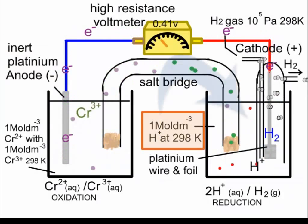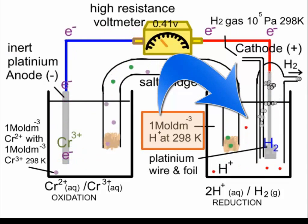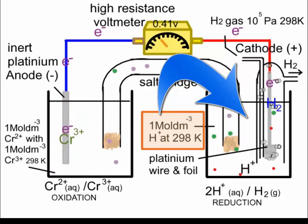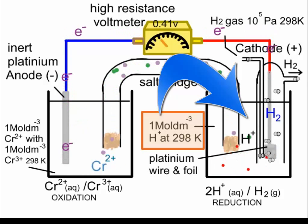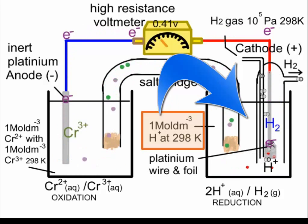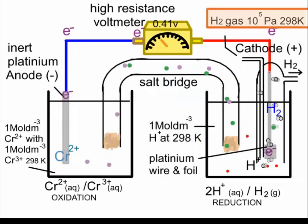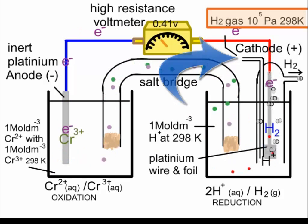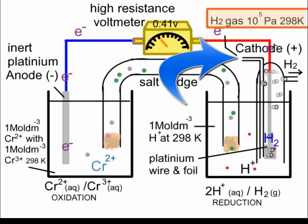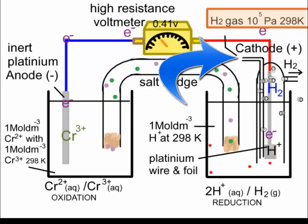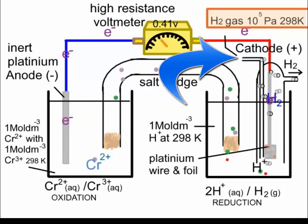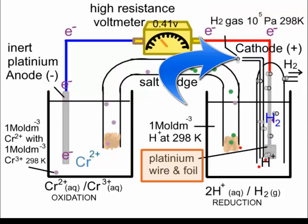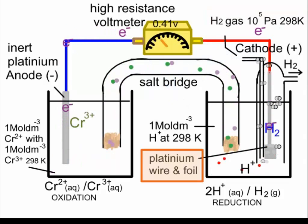The inert metal is platinum, and it serves as the anode. Turning to the right-hand half cell, again the solution is one mole per cubic decimetre with respect to hydrogen ions — for example, one molar hydrochloric acid solution — at a temperature of 298 K, 25 degrees C. In a gas cell such as this hydrogen half cell, the gas will be at one atmosphere pressure, which should be written as 1×10⁵ Pascals, and a temperature of 298 K.